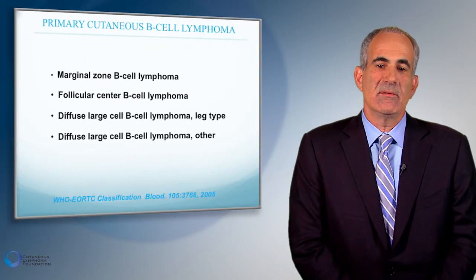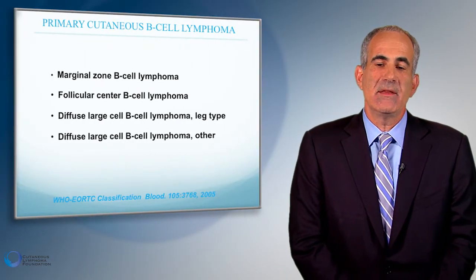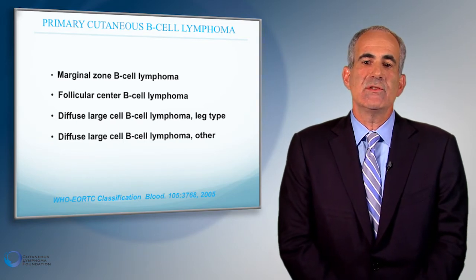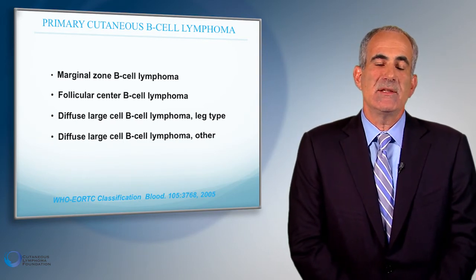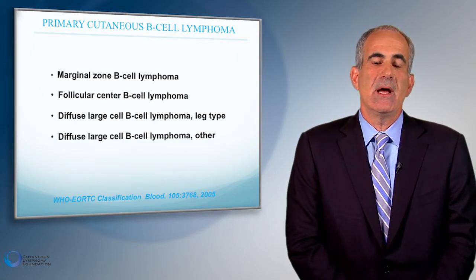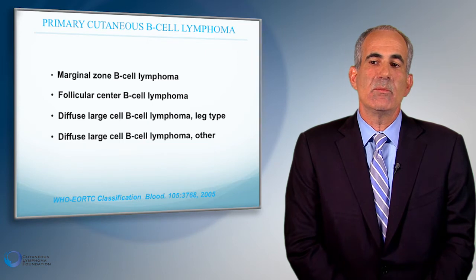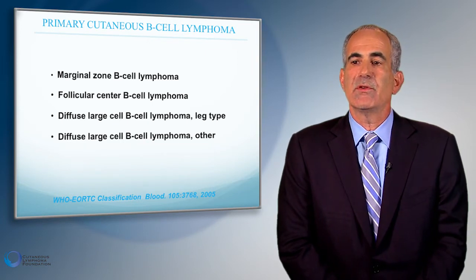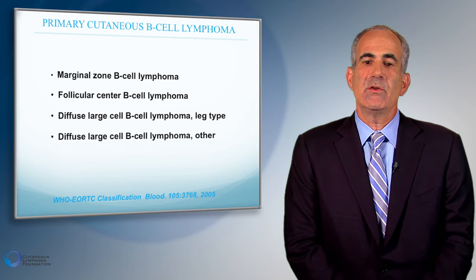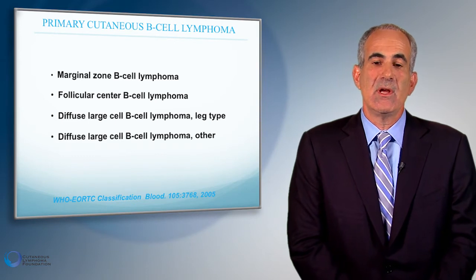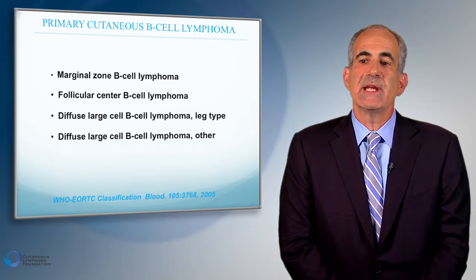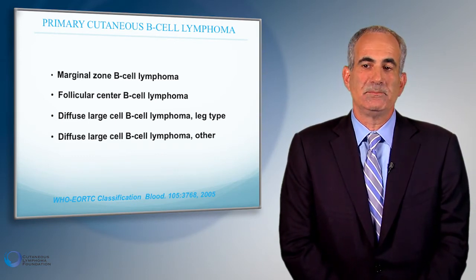We categorize lymphomas by the different types of presentations, the different locations, and the different patterns on the skin biopsy as well as the different proteins or subcategories of lymphocytes. Here you see a list of cutaneous B cell lymphoma categorization.